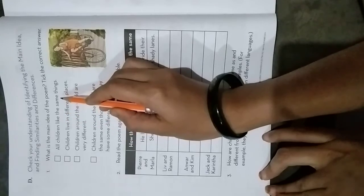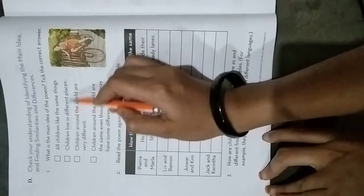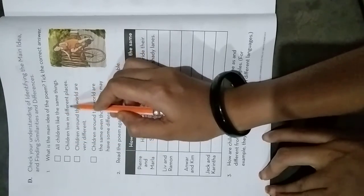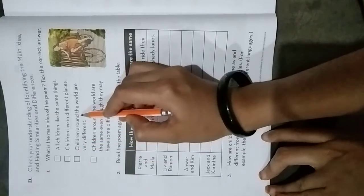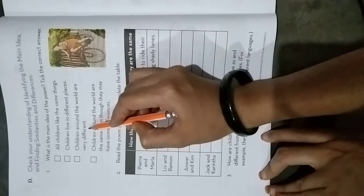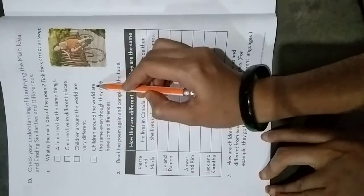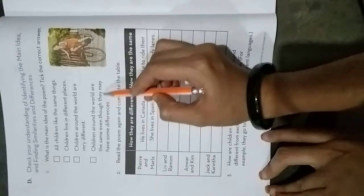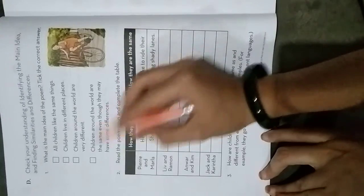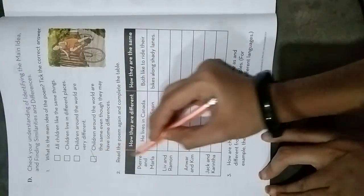All children like the same things. No, children live in different places. Yes, but children around the world are very different. Children around the world are the same even though they may have some differences. This one is right.